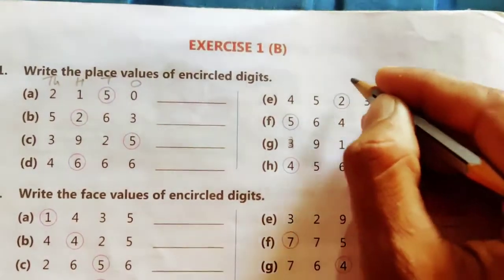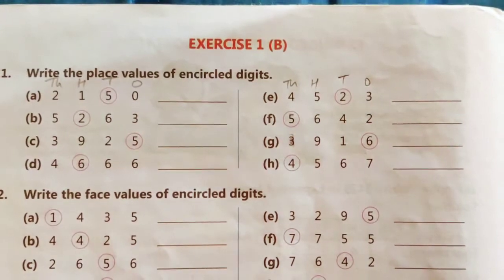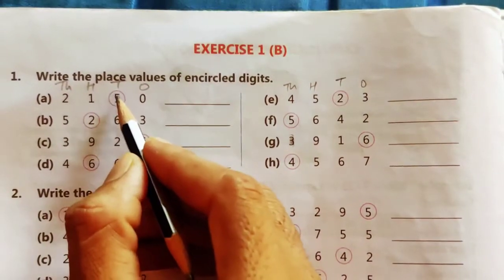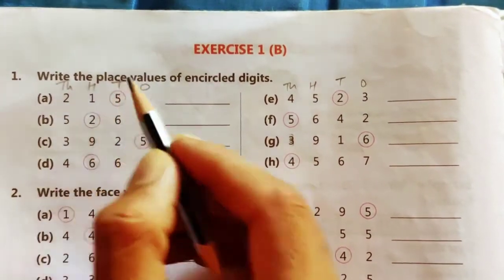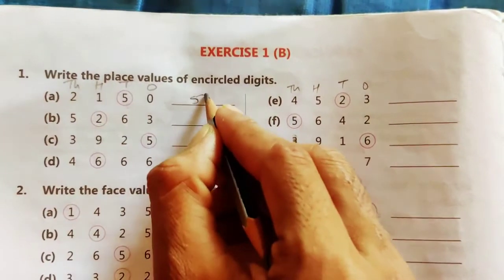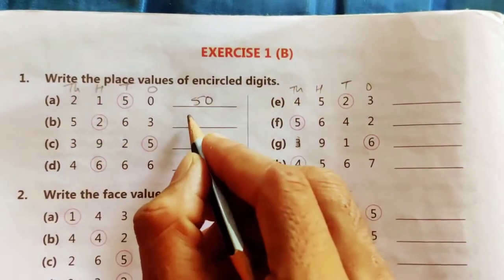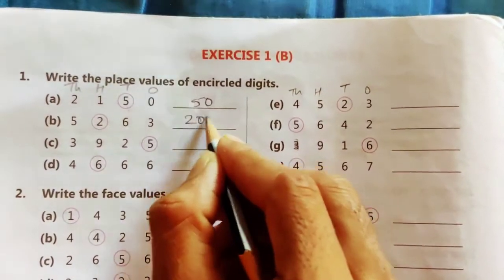Here also ones, tens, hundreds and thousands. Now here the 5 is circled, so 5 is in the place of tens, so the place value of 5 will be 50. Now here 2 is in the place of 100, so the place value of 2 will be 200.